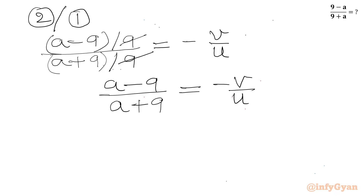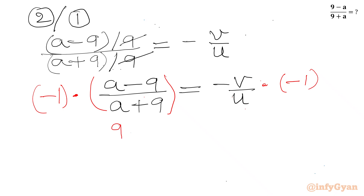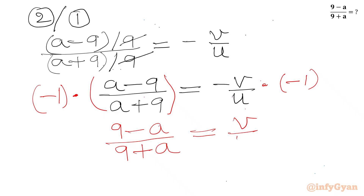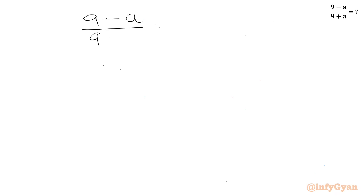Now I will multiply both sides by minus 1. So I can write 9 minus a over 9 plus a, this will be equal to v over u. Now v was cube root of 4 and u was cube root of 5. So I will write 9 minus a over 9 plus a equals cube root of 4 over cube root of 5.